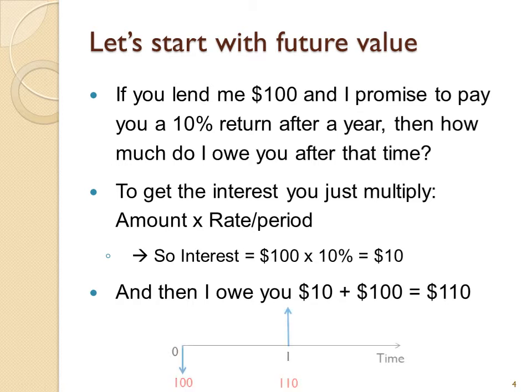Looking at this visually, at time zero the cash flows from your perspective, so you would invest $100. I have the arrow going down because from a purely mathematical point of view the cash flow from your point is minus $100. And then in year one you will receive plus $110.